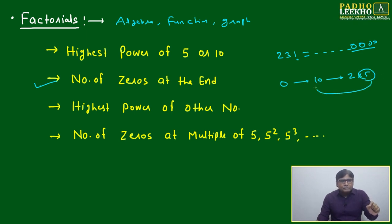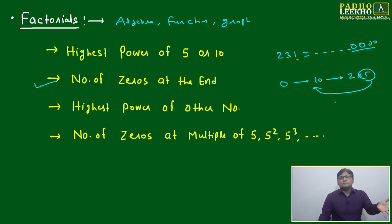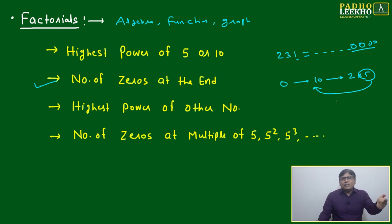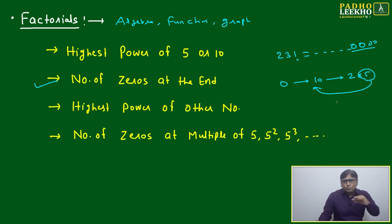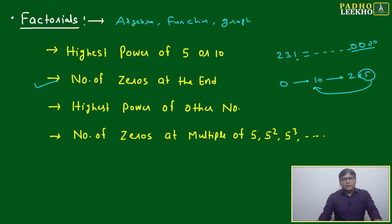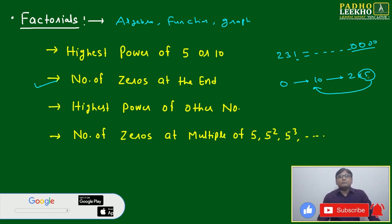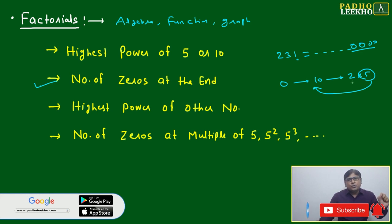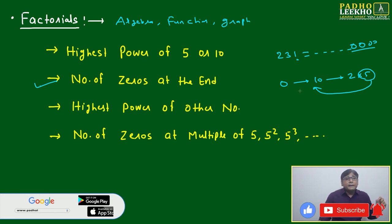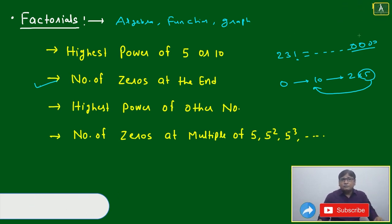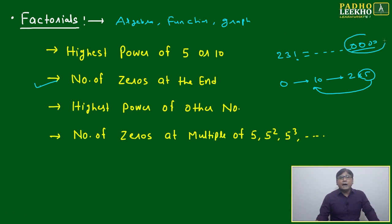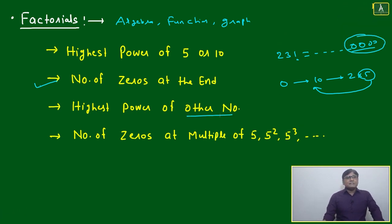If we are able to count the number of 5s, then by default we will be able to count the number of 10s, because 2 will always be available — 2 is less than 5, so the availability of 2s is much greater than the availability of 5s. So we don't need to count 2s; we only have to count 5s. The number of 5s will secure the number of 10s, and the number of 10s tells us how many zeros there will be.